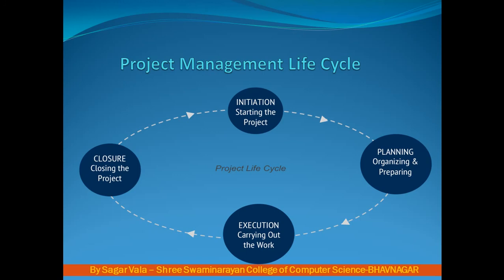The first phase is initiation, the second one is planning, the third is execution, and the fourth one is closing the project. So the project management life cycle is divided into these four steps.